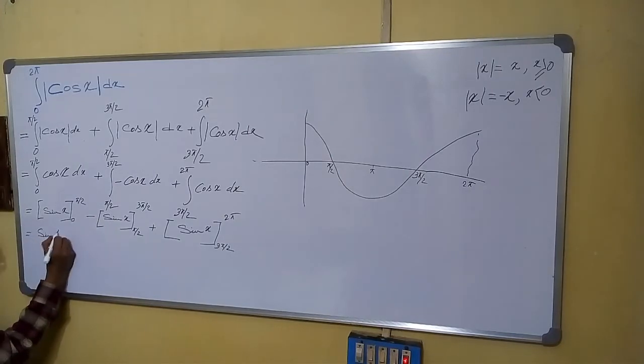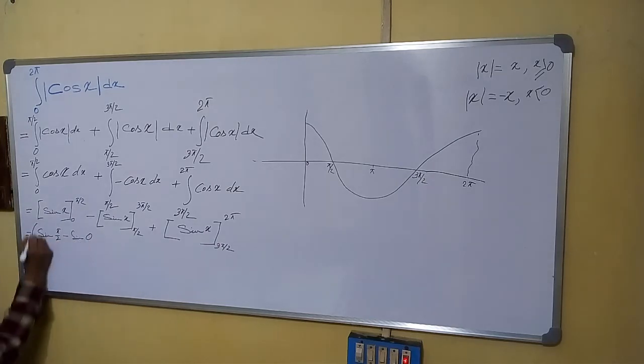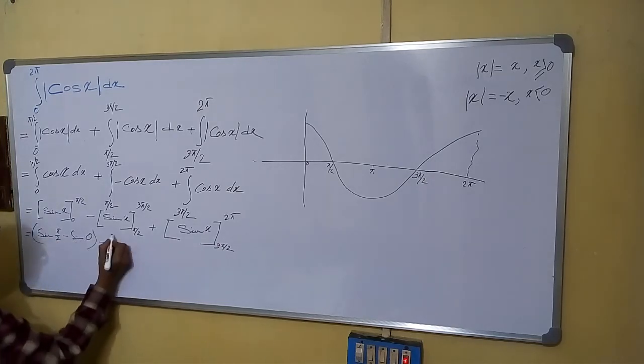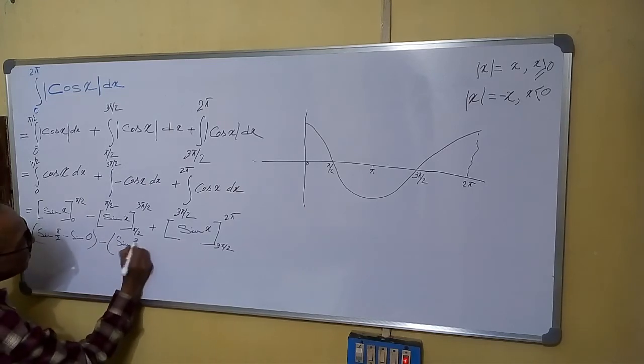This is equal to sin pi by 2 minus sin 0, minus sin 3 pi by 2 minus sin pi by 2, plus.